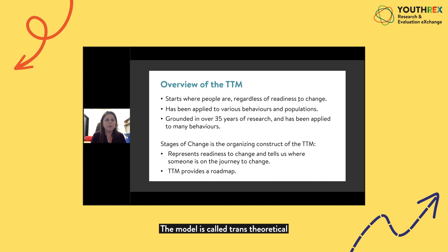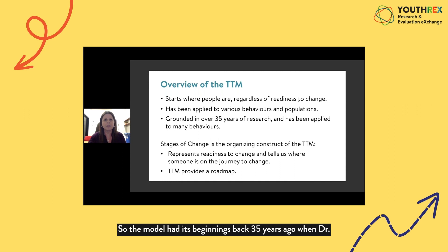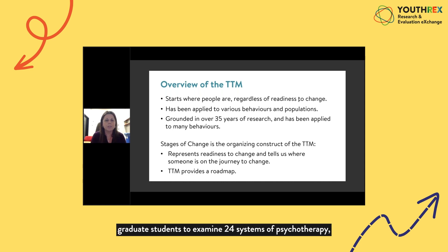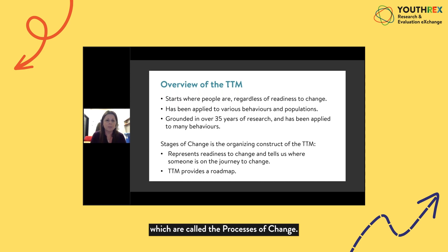The model is called transtheoretical because it draws from and integrates many different theories of behaviour change that are often considered incompatible. The model had its beginnings about 35 years ago when Dr. James Prochaska at the University of Rhode Island asked his psychology graduate students to examine 24 systems of psychotherapy, identify the basic types of change within them, and how they relied on change. That list was eventually distilled down to 10 basic strategies, called the processes of change, which we'll discuss in detail in part two.